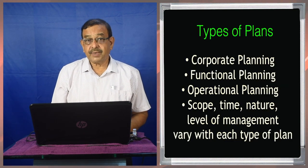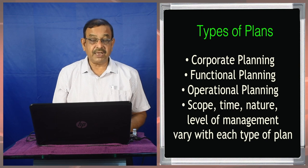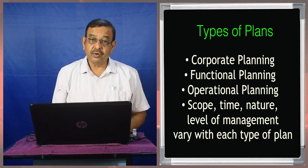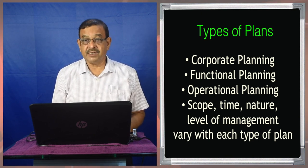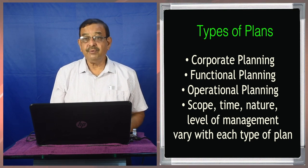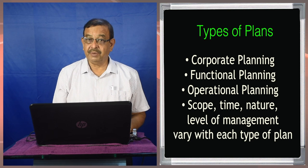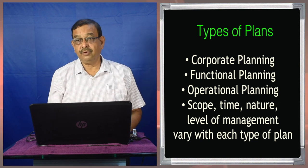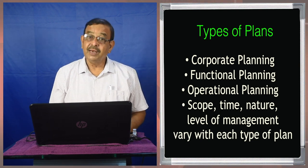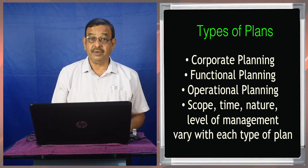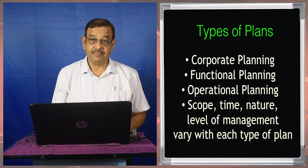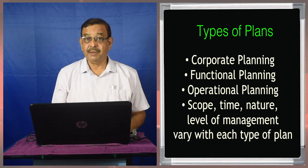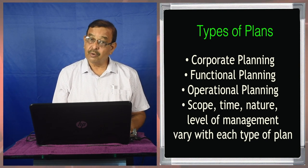There are different types of plans. One is corporate planning, which is for the entire organization — also called organizational planning. In case of non-corporate organizations it will be organizational planning, and in case of companies we call it corporate planning. The second one is functional planning — like the marketing plan, production plan, materials plan — for the different functions of the organization. It could also be operational planning, such as scheduling how materials will be dispatched or received, how production will be scheduled, and budgetary control.